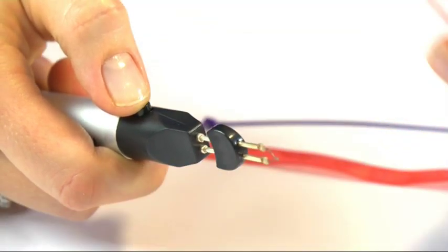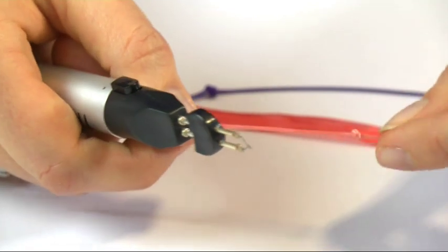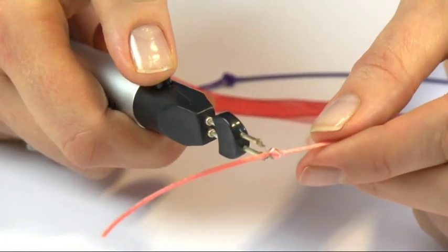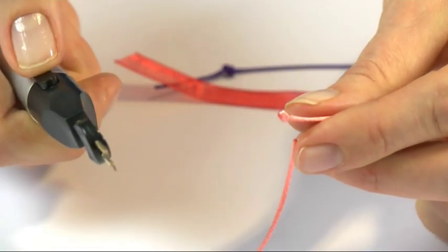Now, you can use this on any nylon-based thread, so this is our satin cord. Just threading it through, press the button, and away it comes.